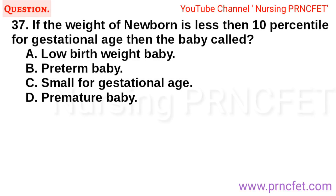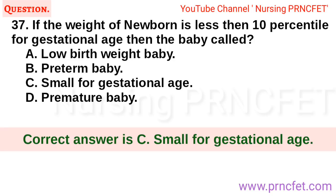Question 37: If the weight of a newborn is less than the 10th percentile for gestational age, then the baby is called: A. Low birth weight baby. B. Preterm baby. C. Small for gestational age. D. Premature baby. Correct answer is C. Small for gestational age.